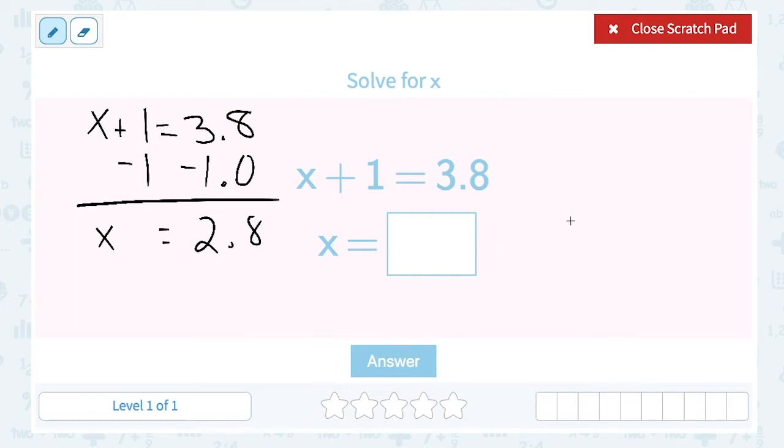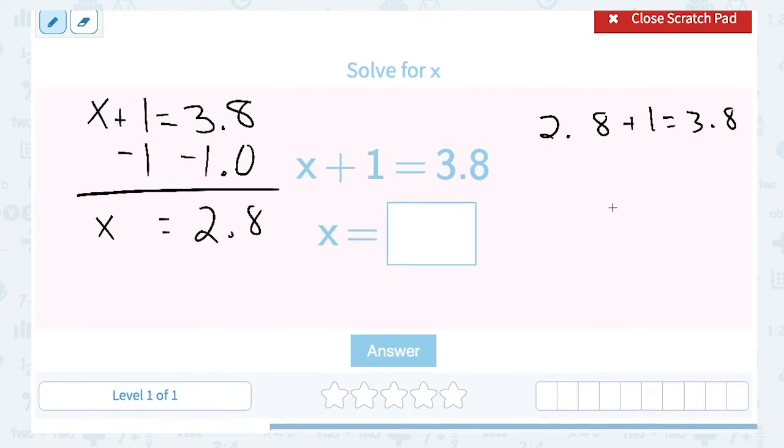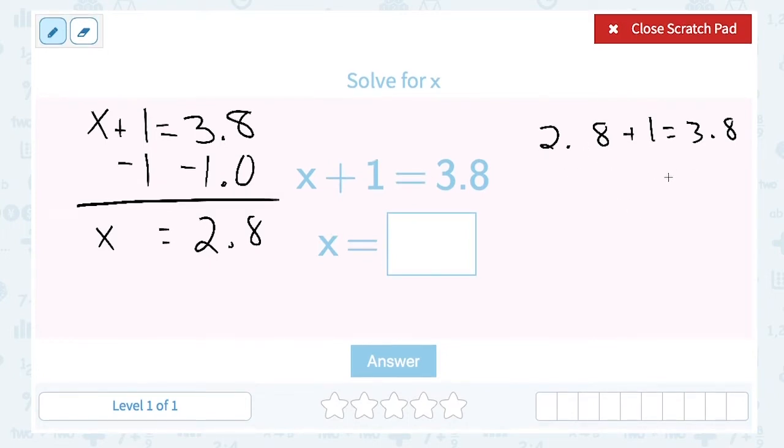Now we can always check our work by taking our answer and putting it back into the original equation. So 2.8 plus 1 equals 3.8. I want to do the addition and make sure that it actually does equal 3.8.